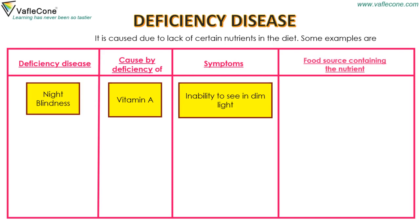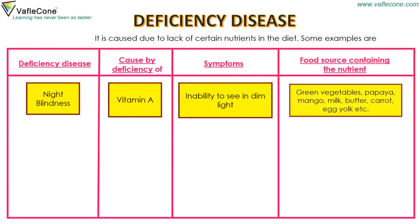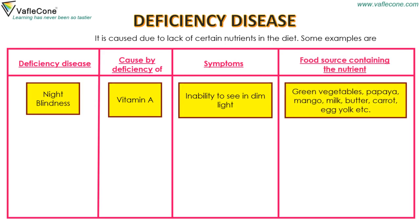Food sources containing the nutrients for vitamin A are green vegetables, papaya, mango, milk, butter, carrot, egg yolk, etc.